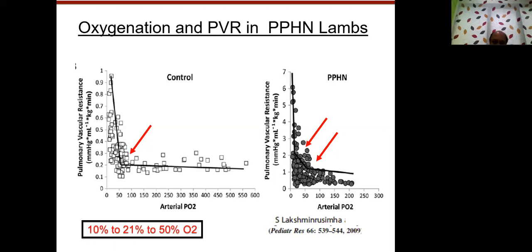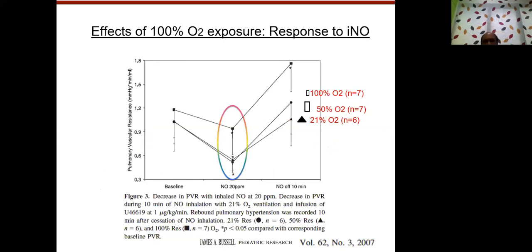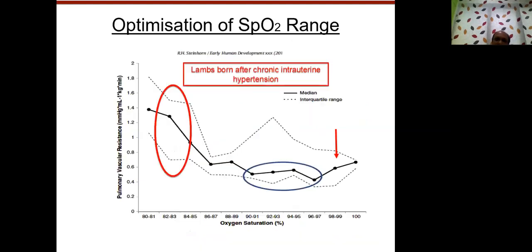When subjects were exposed to 100% oxygen and nitric oxide at 20 ppm was started, there was a definitive drop in PVR from baseline. However, within 10 minutes of stopping nitric oxide, there was rebound pulmonary hypertension — and individuals given 100% oxygen had significantly more severe rebound compared to those on 21% oxygen. This shows that hyperoxia causes a more drastic rebound effect.